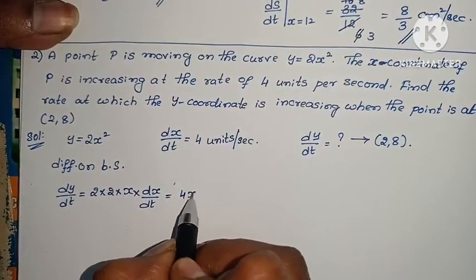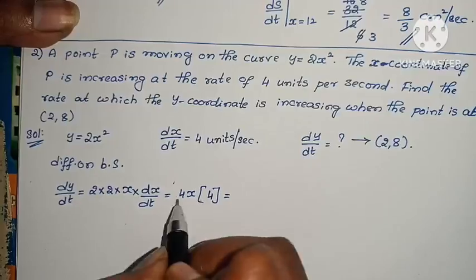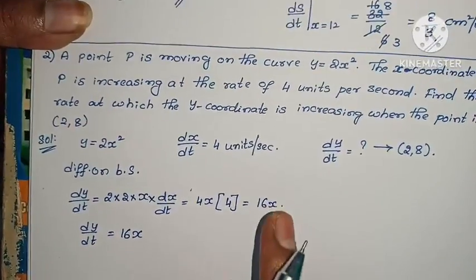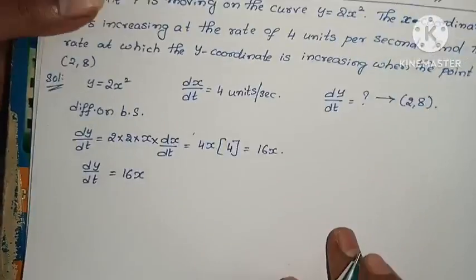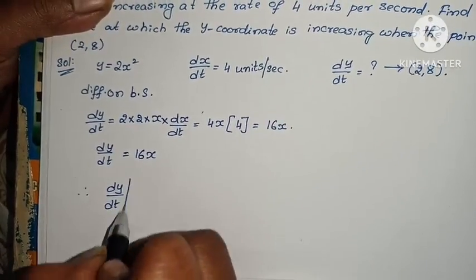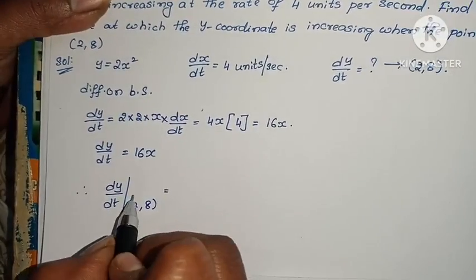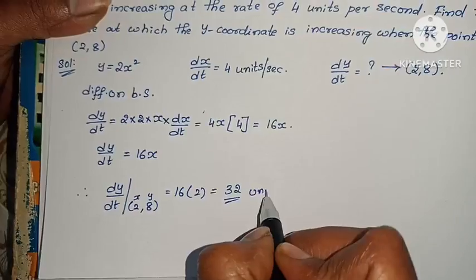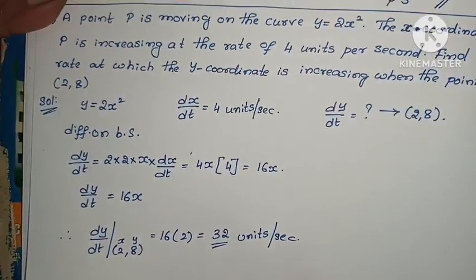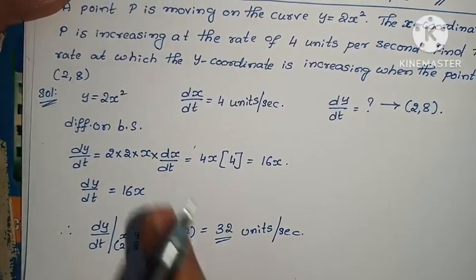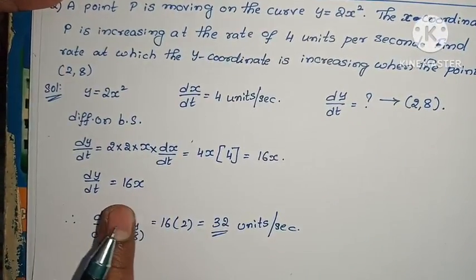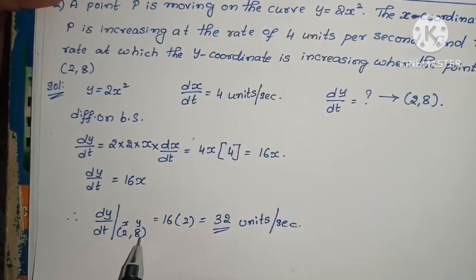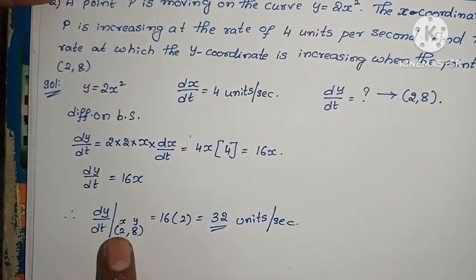Differentiate on both sides: dy/dt equals 4x into dx/dt value, which is 4. So 4 times 4 is 16x. dy/dt equals 16x. Find dy/dt at point (2,8). Therefore dy/dt at (2,8) equals 16 into x, which is 2, equals 32 units per second. This problem is easy.